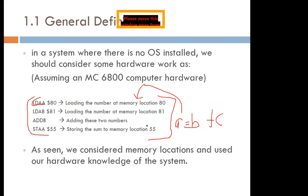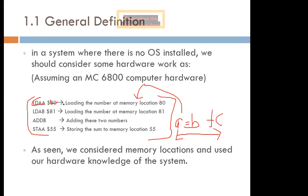With the operating system, you just write A = B + C and the whole thing is handled. You don't have to know how it does the loading of accumulators, adding A and B, or storage. That is why we say the operating system hides the complexities from the user — you don't have to know which memory location loads which value; the operating system will take care of that.